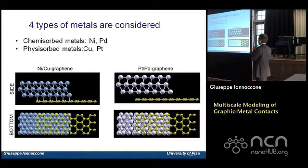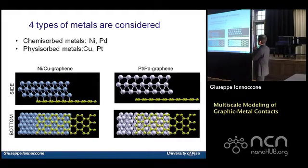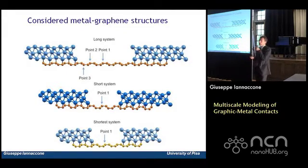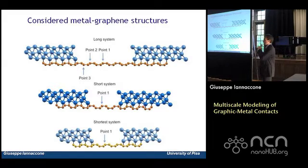We consider four different types of metal. Two are chemisorbed on graphene, forming a strong bond — nickel and palladium — and two are physisorbed, forming a weaker bond — copper and platinum. We optimize the geometry by optimizing the distance between the metal layer and the graphene sheet. We also consider two geometries: a long structure and a short structure, differing only in the separation between the two metal regions, and we will show this has relevance.